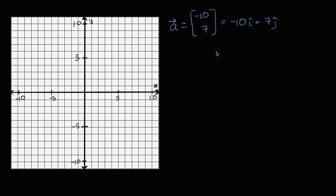Either way, we could draw this vector. We could pick an initial point — if we say the initial point is the origin, what would this vector look like? Well, the x component is negative 10, so we'd go to negative 10, and the y component is seven, so we'd go 10 to the left and then seven up. The vector would start at the origin, and its terminal point would be at x equals negative 10, y equals seven.